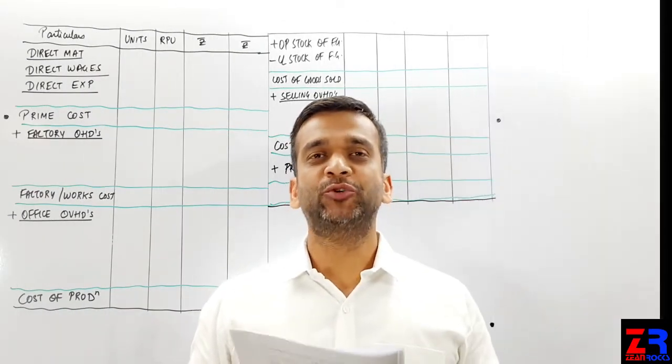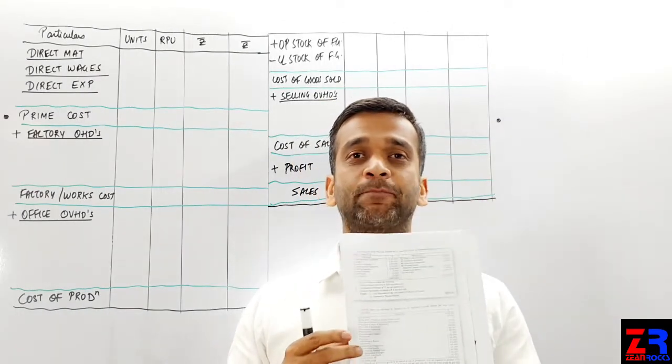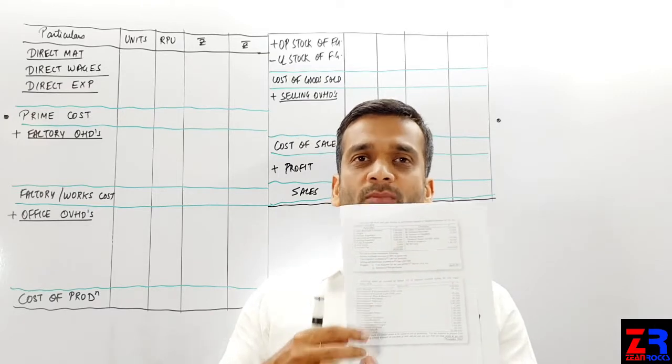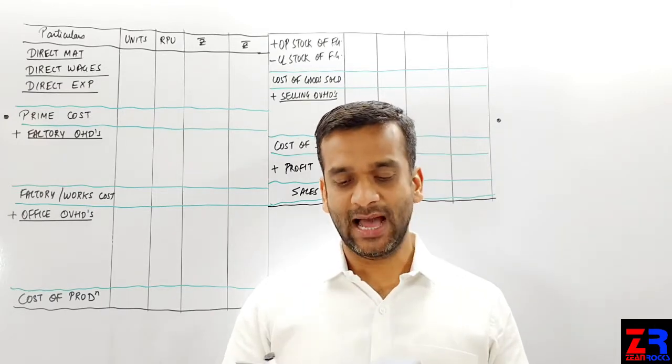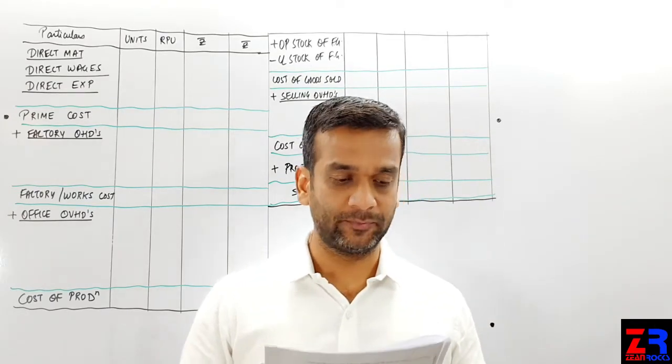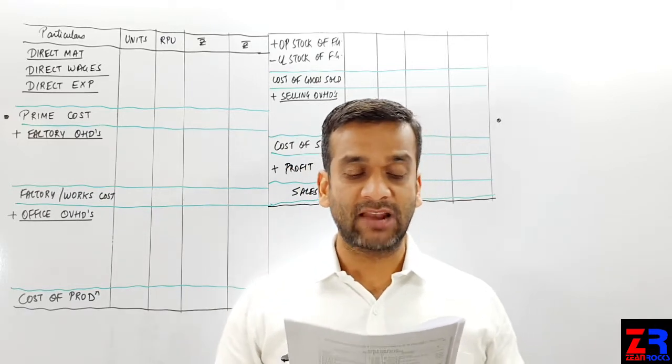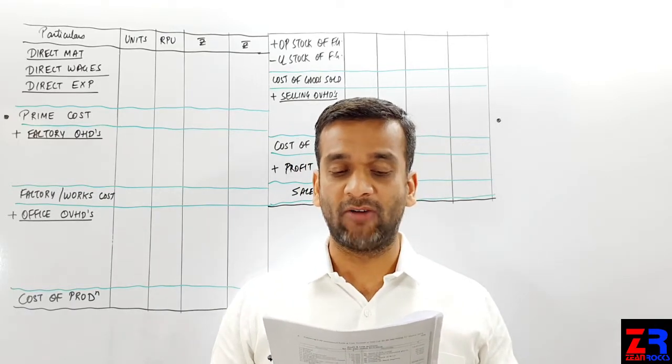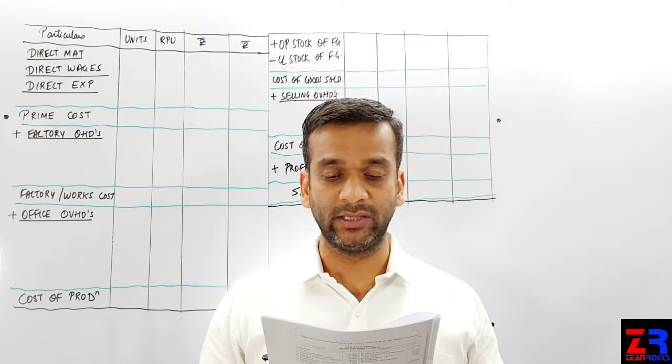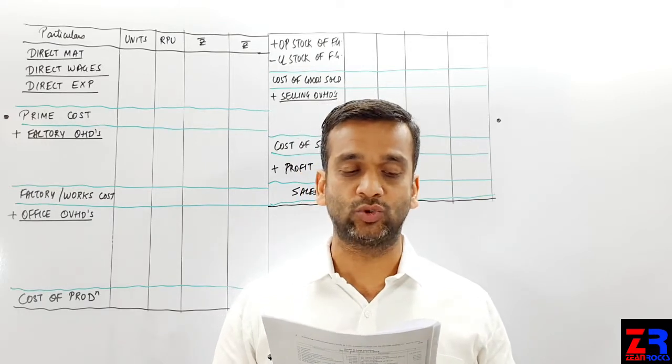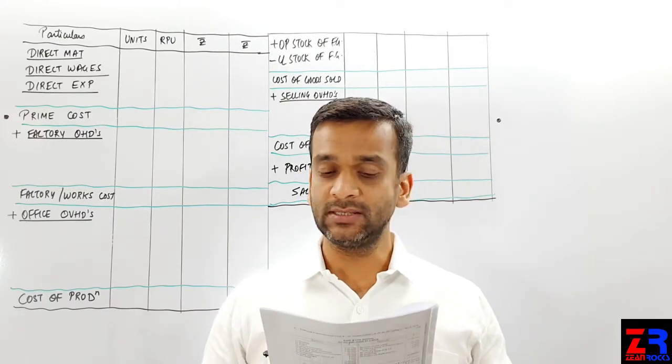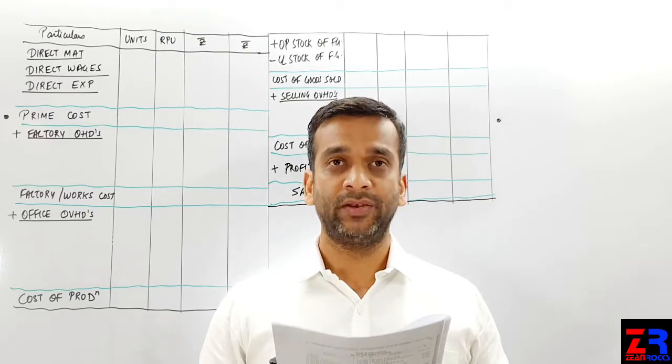Hello students, my today's problem of discussion is Deepak Limited, the last problem of our sheet. It was asked in November 2014. Following details are furnished by Deepak Limited of expenses incurred during the year ended 31st of March 2018. Particulars and rupees is given.